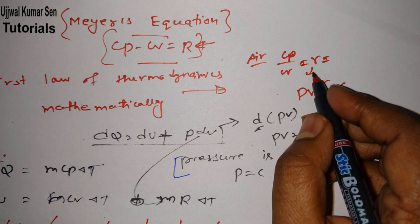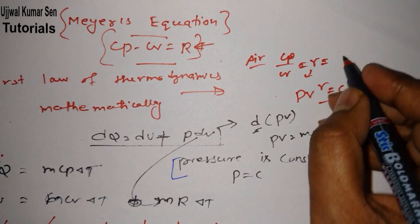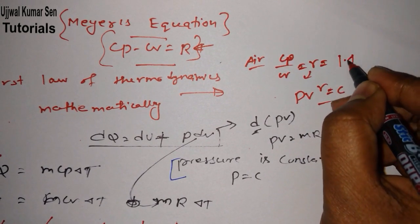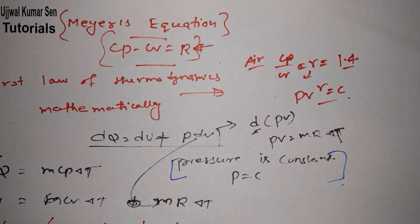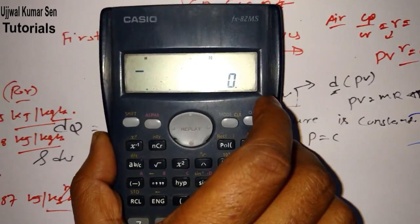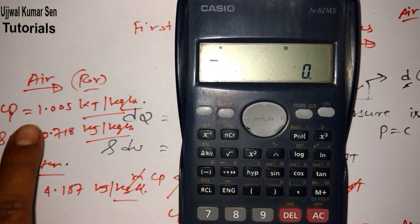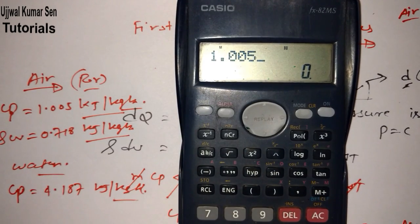Now Cp by Cv is equal to 1.4 for air. Let me share with you the proof of it. So what I have shared with you, basically Cp is equal to 1.05 and Cv is equal to 0.718.